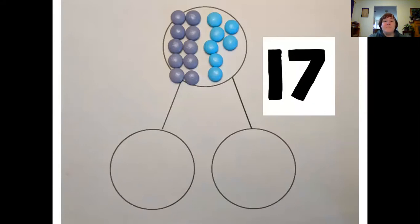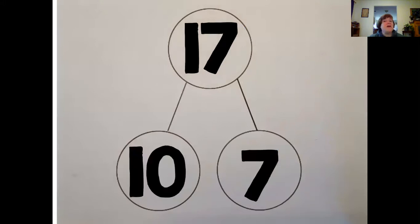If I put that back up in the top and put my two parts in the bottom, I have the 10 on one side. I have the seven on the other. They push together to make 17. If I swap them out, I can see the numbers. 10, seven is the same as 17.